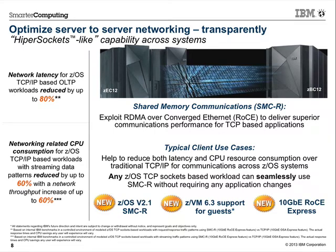The high-level overview of what SMCR provides is sometimes referred to as high-performance sockets or hypersockets-like capability, but now across platforms. Our internal micro-benchmarks show two significant benefits. First, very low latency — workloads showed latency reduced by 80% over standard Ethernet via standard TCP/IP communications using OSA on System Z.